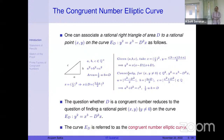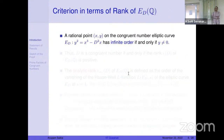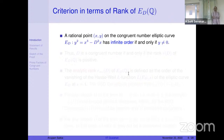We refer to this curve as the congruent number elliptic curve. If the y-coordinate of a point is non-zero then that point has infinite order; in other words, the elliptic curve has positive rank if and only if d is congruent. So whether d is congruent is equivalent to the rank of this elliptic curve being positive.